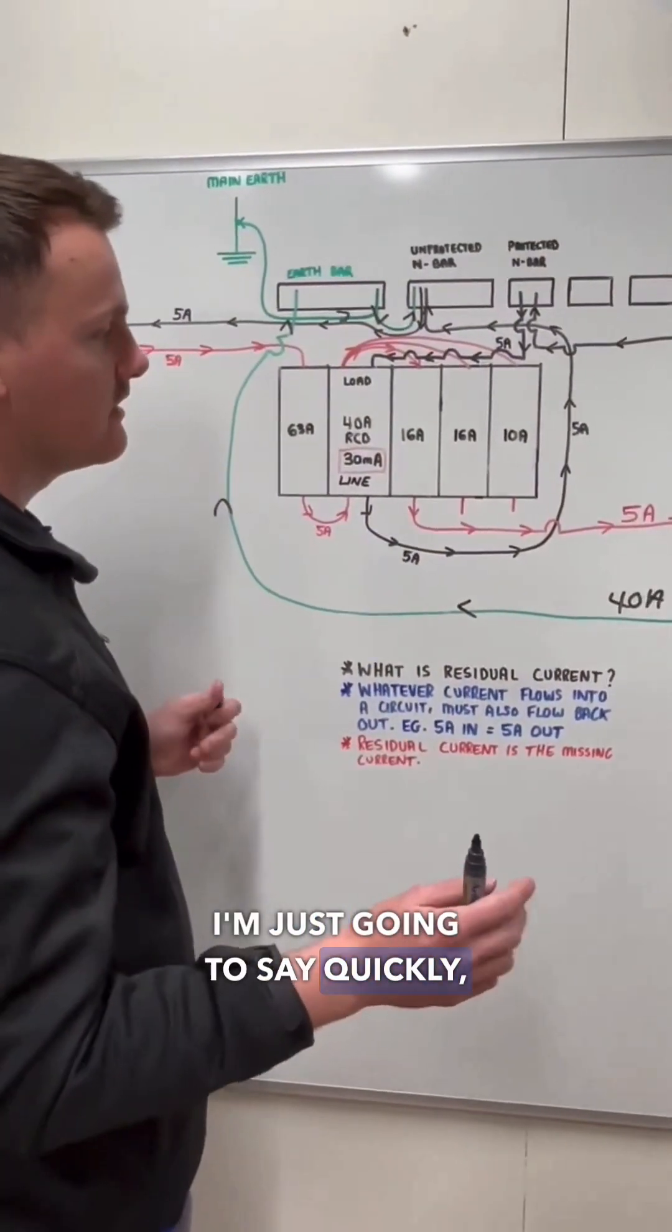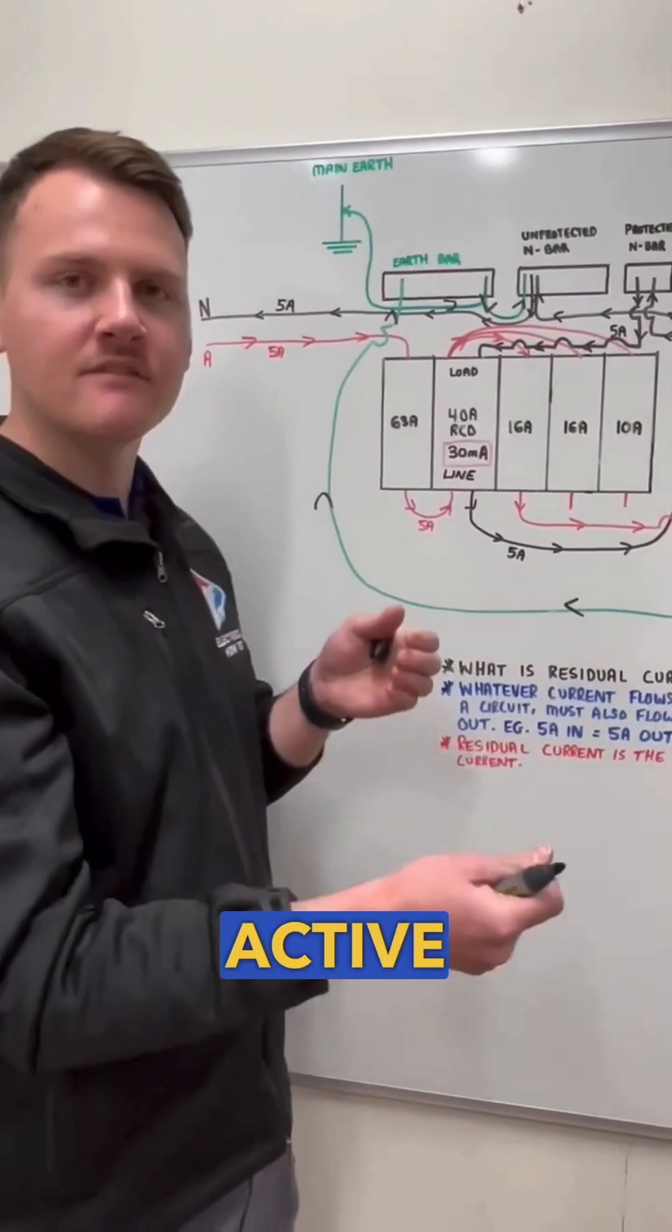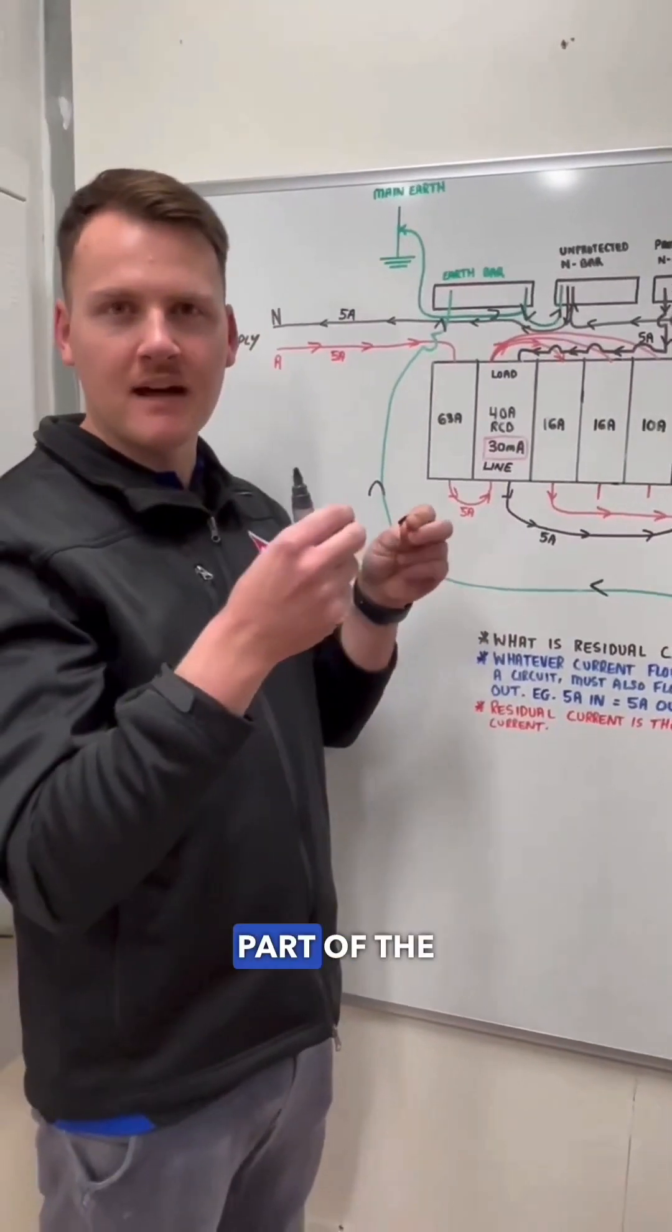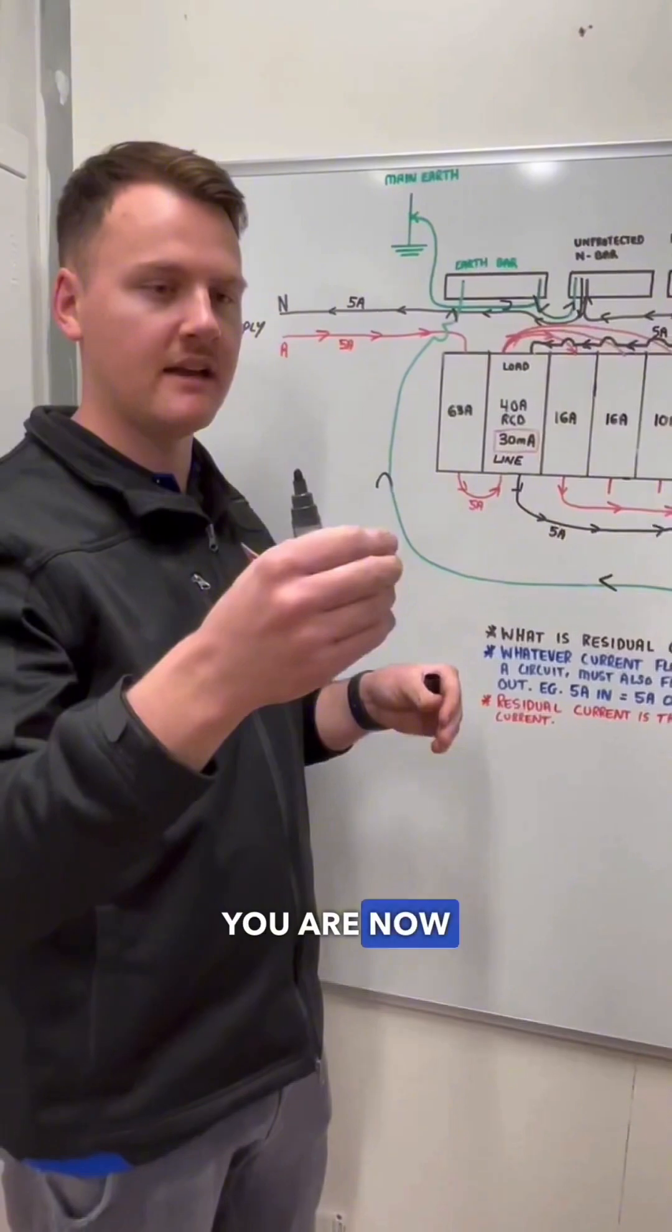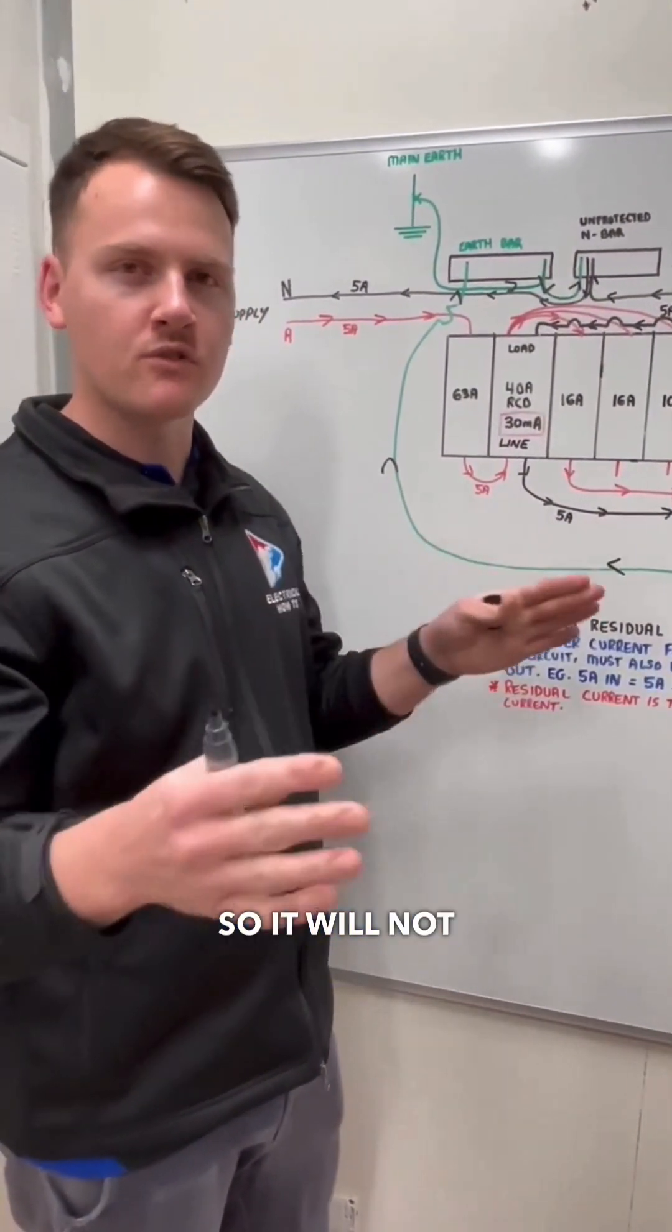Now, I'm just going to say quickly, if you were to just grab the active and neutral, you actually just become part of the circuit. The safety switch isn't going to trip. There's no imbalance of current. You are now the active and you're returning through the neutral. So it will not trip.